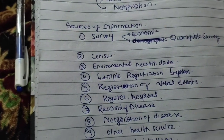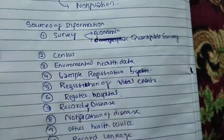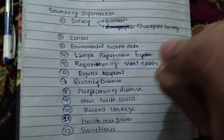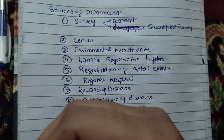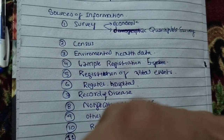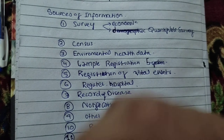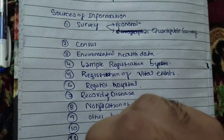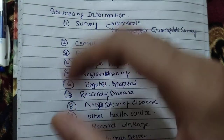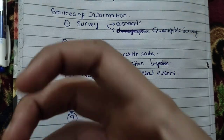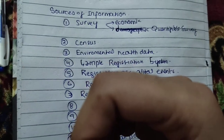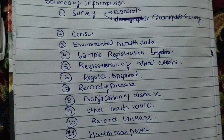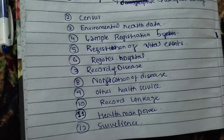Now, where do we collect information? First, we go to surveys — which can be economic surveys or quantifiable surveys. After that, we collect census data, then environmental health data, and then we use the sample registration system and registration of vital events.